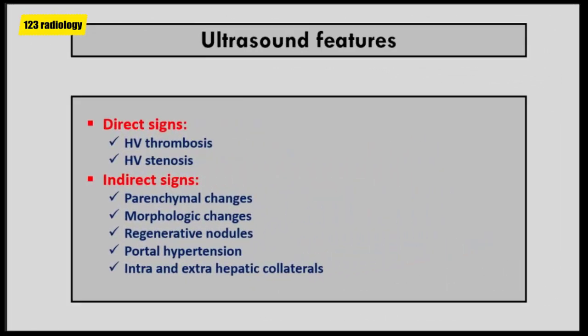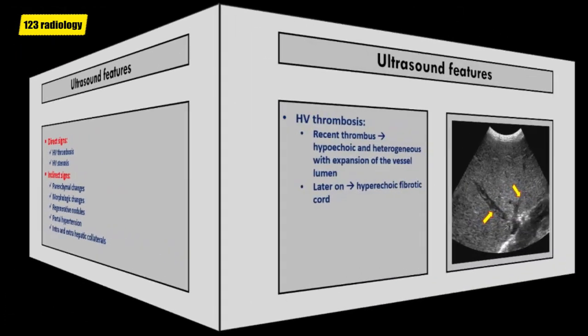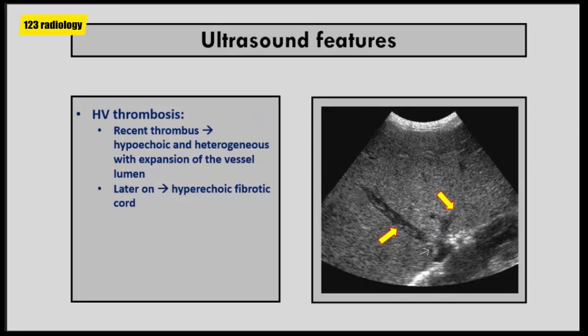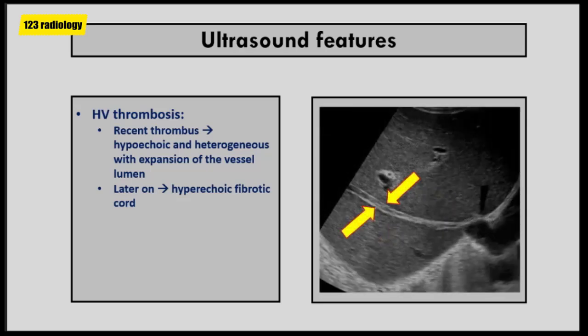Ultrasound features of Budd-Chiari syndrome are classified into direct signs — including hepatic vein thrombosis and hepatic vein stenosis — and indirect signs including parenchymal changes, morphologic changes, regenerating nodules, portal hypertension, and intra- and extra-hepatic collaterals. Hepatic vein thrombosis can be total or partial, focal or extensive, and may involve one or more hepatic veins. On ultrasound, acute thrombosis is hypoechoic and associated with expansion of the vessel lumen, with no flow seen on color Doppler in the thrombosed segment. In chronic stage, the thrombosed hepatic vein results in formation of a hyperechoic fibrotic cord, as seen in this image.